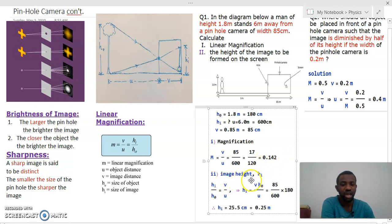The image height, which is hi, now from our formula we saw that hi/ho = v/u. What we have to do is make hi the subject by multiplying both sides by ho. When we do that, we end up with the formula hi = (v × ho)/u.